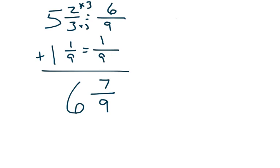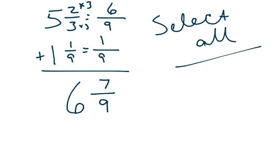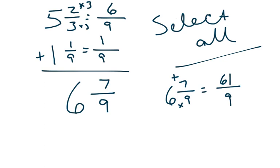Since this one is left as a mixed number, usually we would leave it like that, but if they do say select all that apply, you would also want to change that to an improper fraction — where you multiply then add, and the bottom stays the same — so nine times six is fifty-four plus seven is sixty-one, making it 61 over 9. Again, we all use our fingers sometimes if we need to. So if it's on Evolve, you'll probably need to select both.